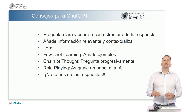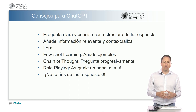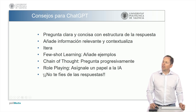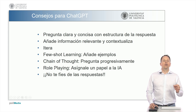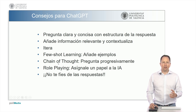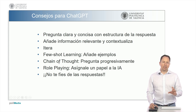Another technique is role-playing, directing the AI to assume a specific role based on how we want the response — for instance, instructing it to portray an expert, or to explain a concept as an 11 or 13-year-old would to their father. It's crucial not to blindly trust the answers without cross-checking them. ChatGPT is an excellent productivity tool for those with prior knowledge, but it's essential to critically evaluate responses, as the AI can present data as absolute truths even when mathematical calculations are inaccurate.